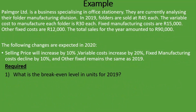What is the break-even level in units for 2019? The break-even point is the point at which we are not making a profit and we are not making a loss — so it's where we break even. The break-even units is the amount of units that we need to sell for us to be neither making a profit nor a loss, just to be able to pay for all our fixed costs and other expenses, with a net profit of zero.